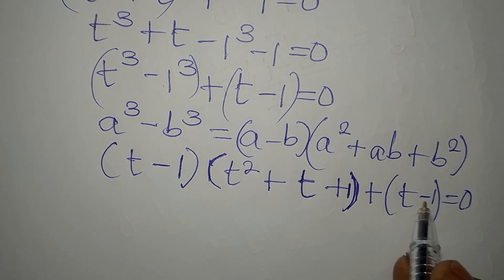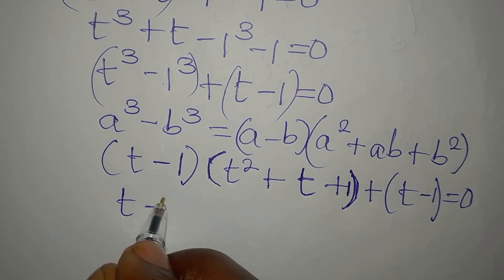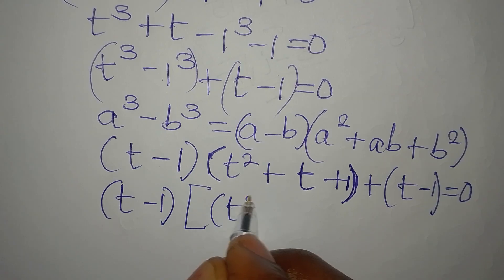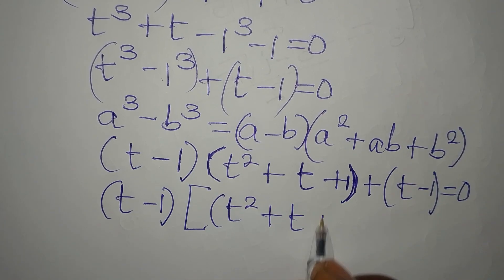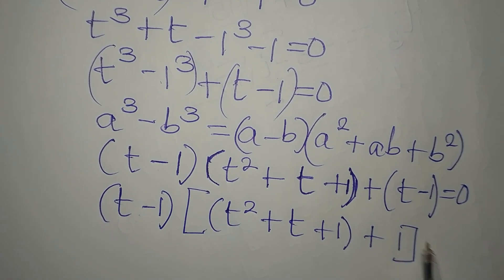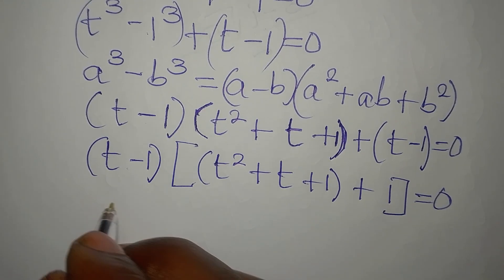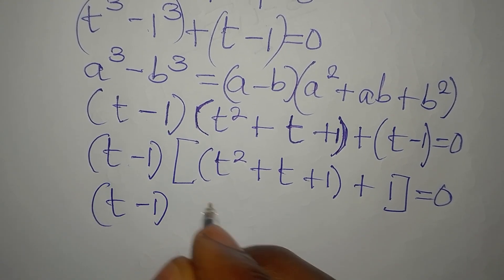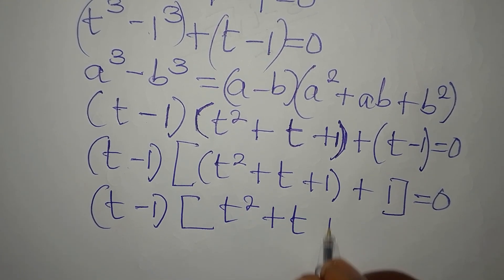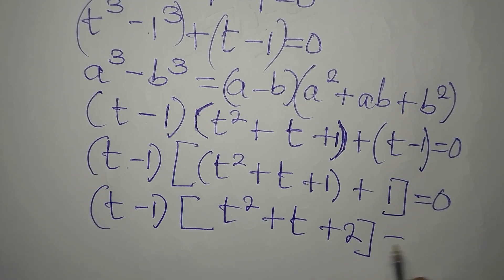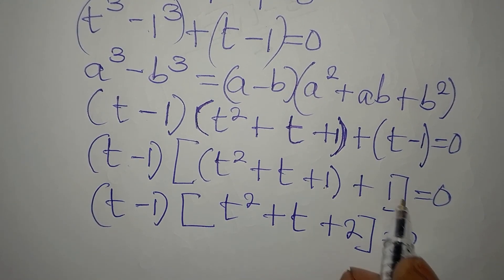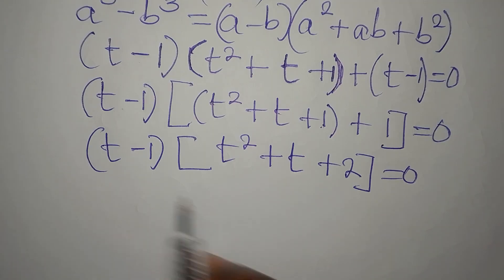Now see t minus 1 here and it's also here, so t minus 1 is a common factor. Then t squared plus t plus 1 plus 1 divided by this gives t minus 1 as a factor, and t squared plus t plus 2 equals 0. This is because we open the bracket and add the two.